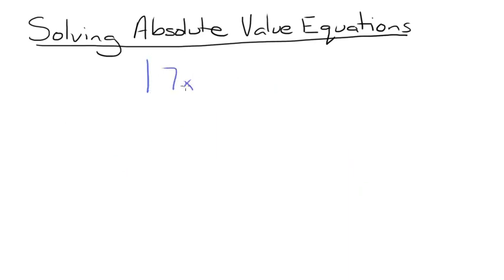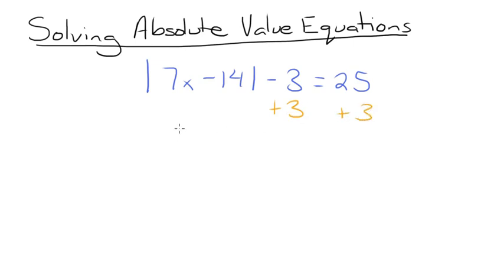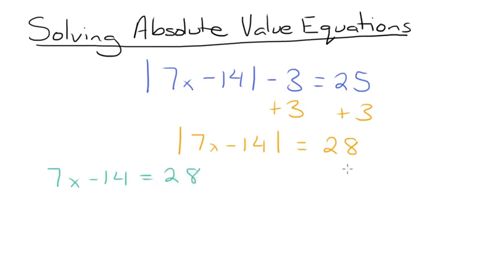The absolute value of 7x minus 14, minus 3, is equal to 25. Our first step needs to be to isolate the absolute value expression by getting rid of the minus 3. So we add 3 to both sides of the equation, giving us the absolute value of 7x minus 14 is equal to 28. From here, we split our equation into two different ones — we set our expression equal to both the positive and negative value of the right side: 7x minus 14 is equal to 28, and 7x minus 14 is equal to negative 28.